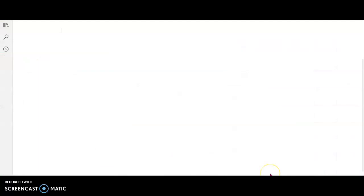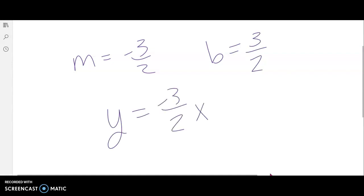And I can go ahead and write an equation now. So my slope was negative three halves and my y-intercept was positive three halves. So now I can write y equals mx plus b. And there is my equation of that linear function.